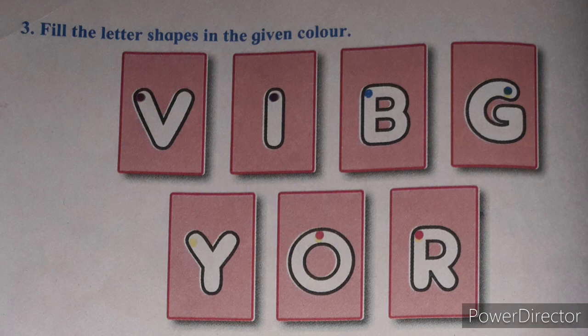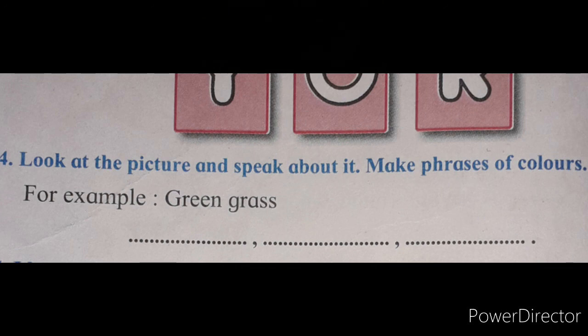Question number four: look at the pictures and speak about them — make phrases of colors. What is a phrase? When two words come together, it becomes a phrase. One example is given here: 'green grass' — green and grass are two words that come together, so we can say this is a phrase: green grass.